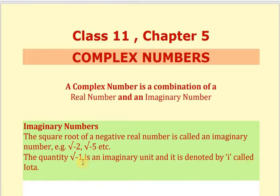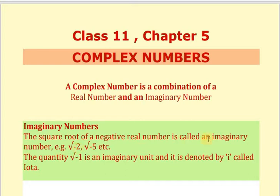Students, until now you have seen square roots of positive numbers. Now we will study square roots of negative numbers. Here, square root of minus 1 is i. If we write square root of minus 2, it equals square root of 2 into minus 1. So we can write square root of minus 2 as square root of 2 times i, replacing minus 1 with i. So imaginary numbers are those which have a negative term inside the square root.